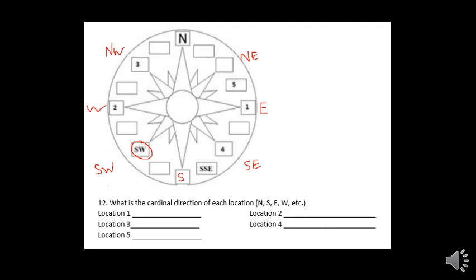So that tells us one we have east, two we have west, three is northwest, four is southeast.